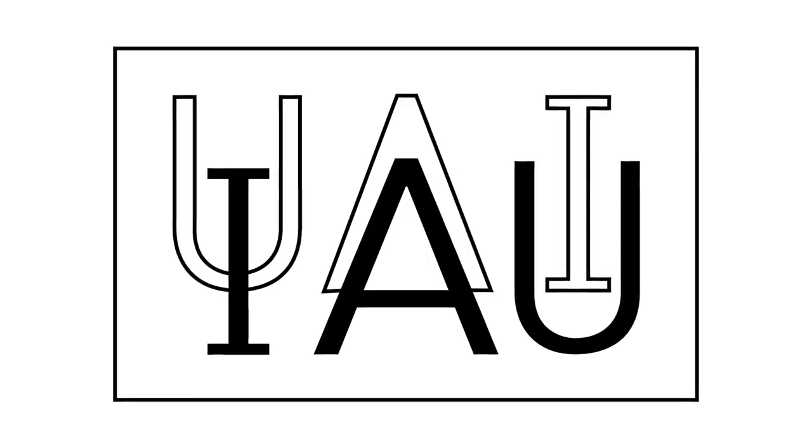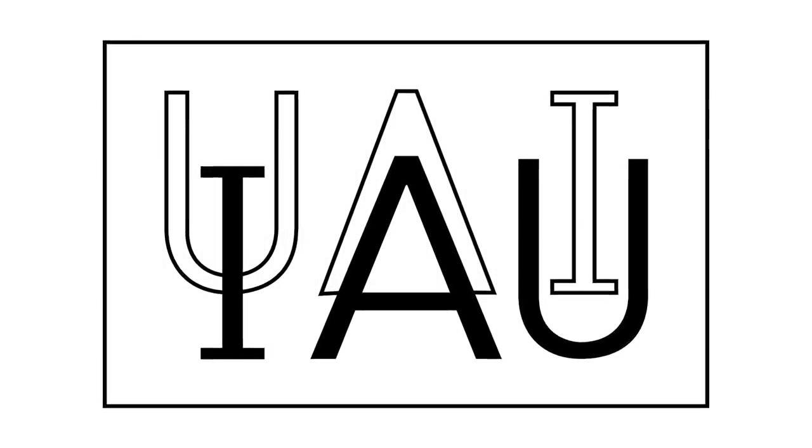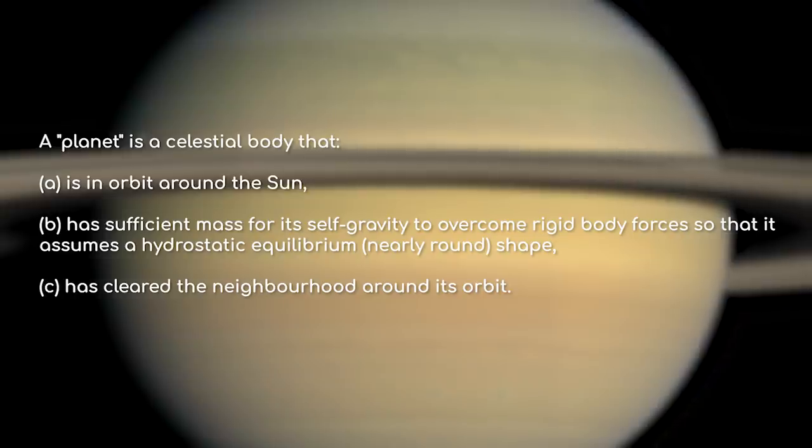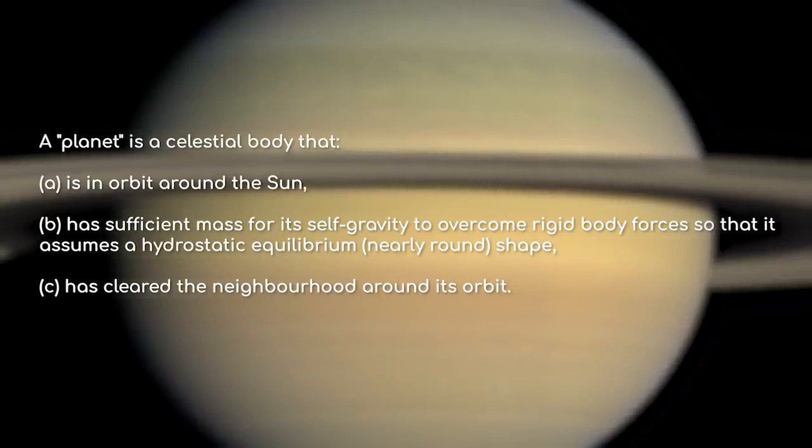In 2006, the International Astronomical Union knew that something had to be done. They finally classified a planet as a celestial object that is in orbit around the sun, has sufficient mass for its self-gravity to overcome rigid body forces so that it assumes a hydrostatic equilibrium,